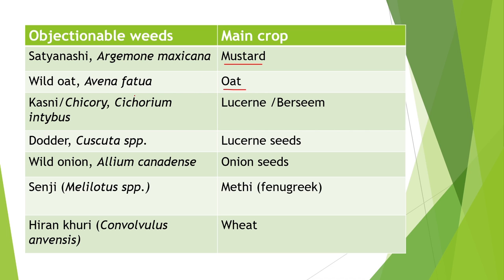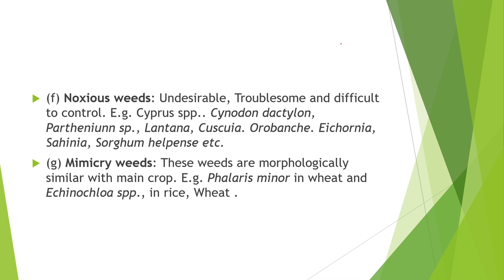Fifth is objectionable weeds — examples include dodder and Cuscuta with lucerne seeds, wild onion with onion seeds, Senji with methi, and hirankhuri with wheat. Next is noxious weeds — undesirable or troublesome weeds that are hard to control. Examples are Cyperus weeds, Cynodon dactylon, Parthenium, Lantana, Orobanche, Eichhornia, and Sorghum halepense.